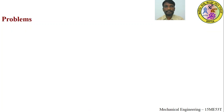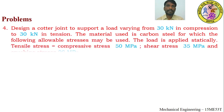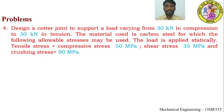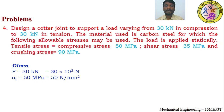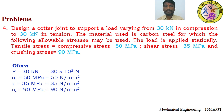Problem 4: Design a cotter joint to support a load varying from 30 kN in compression to 30 kN in tension. The material is carbon steel with the following allowable stresses (load applied statically): tensile stress σ_t = compressive stress = 50 MPa, shear stress τ = 35 MPa, crushing stress σ_c = 90 MPa. Given: P = 30 kN = 30,000 N, σ_t = 50 N/mm², τ = 35 N/mm², σ_c = 90 N/mm².